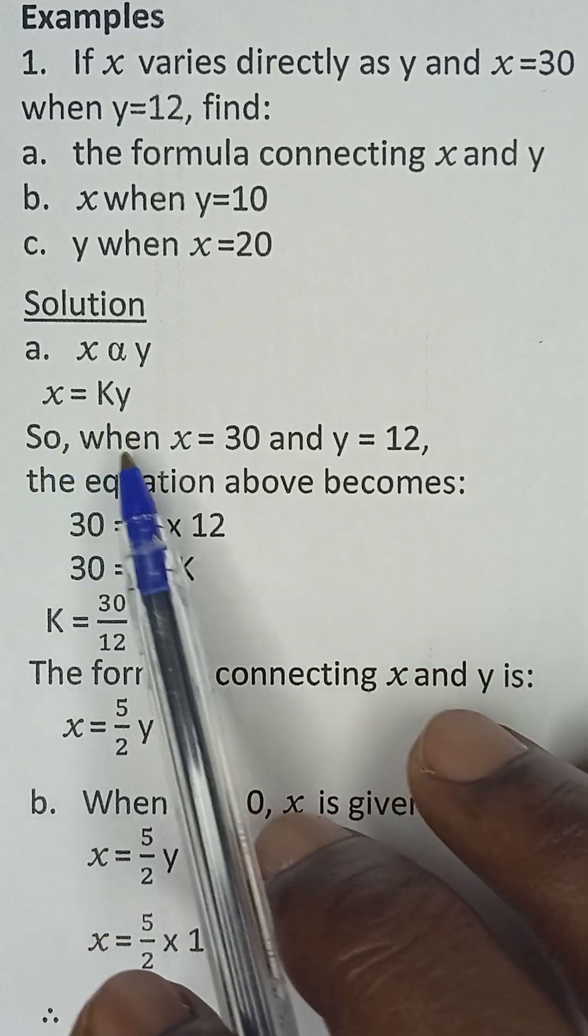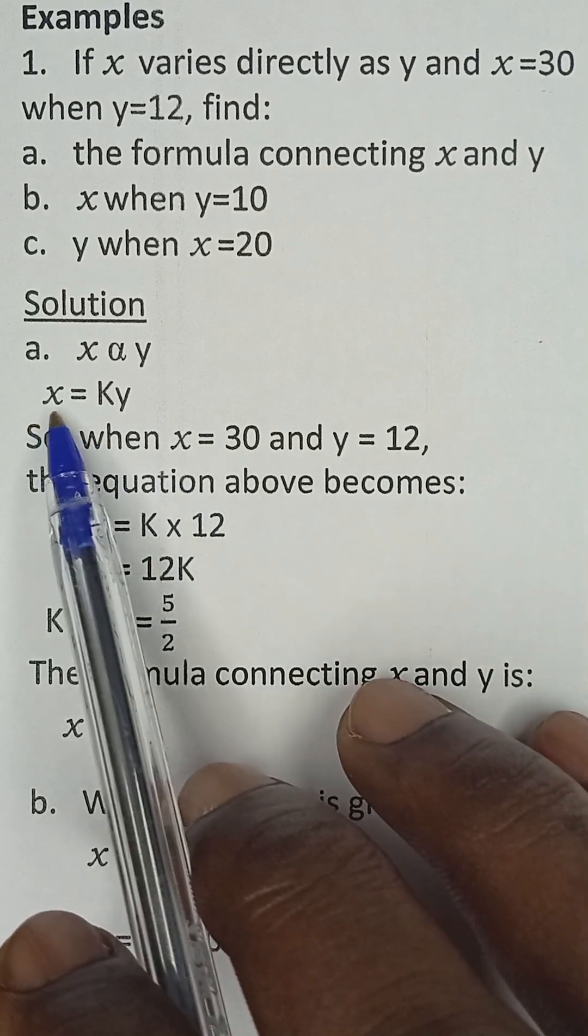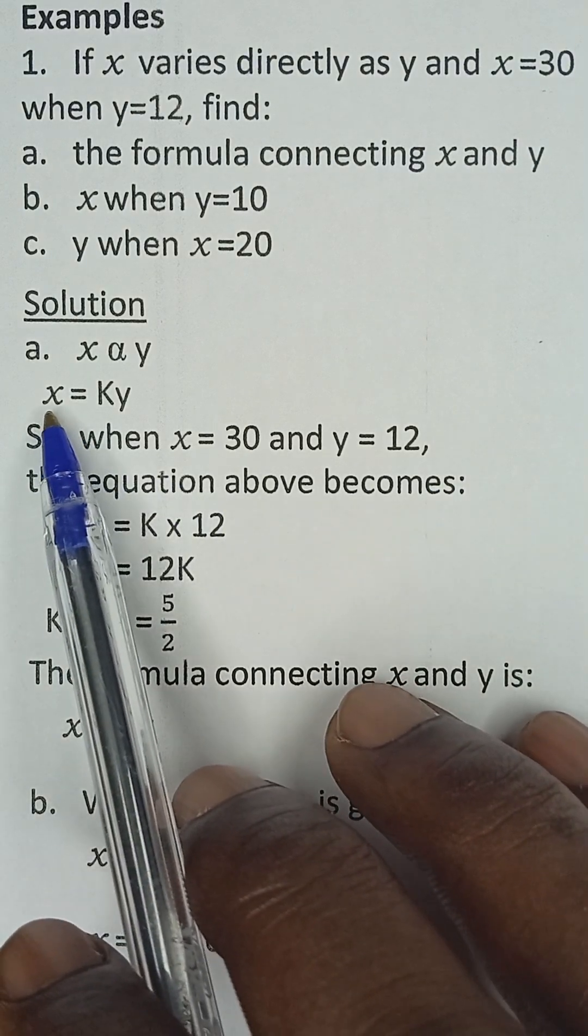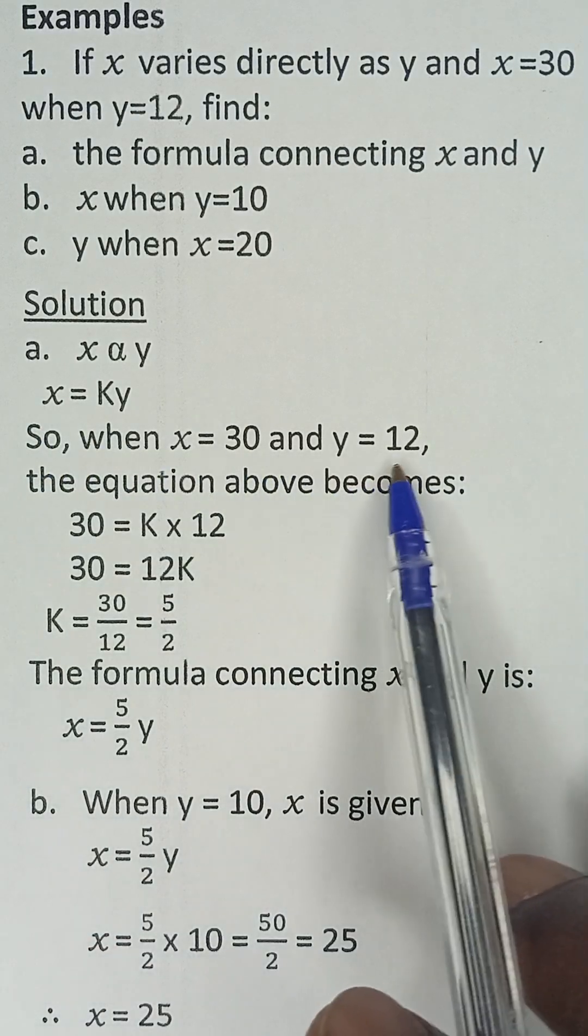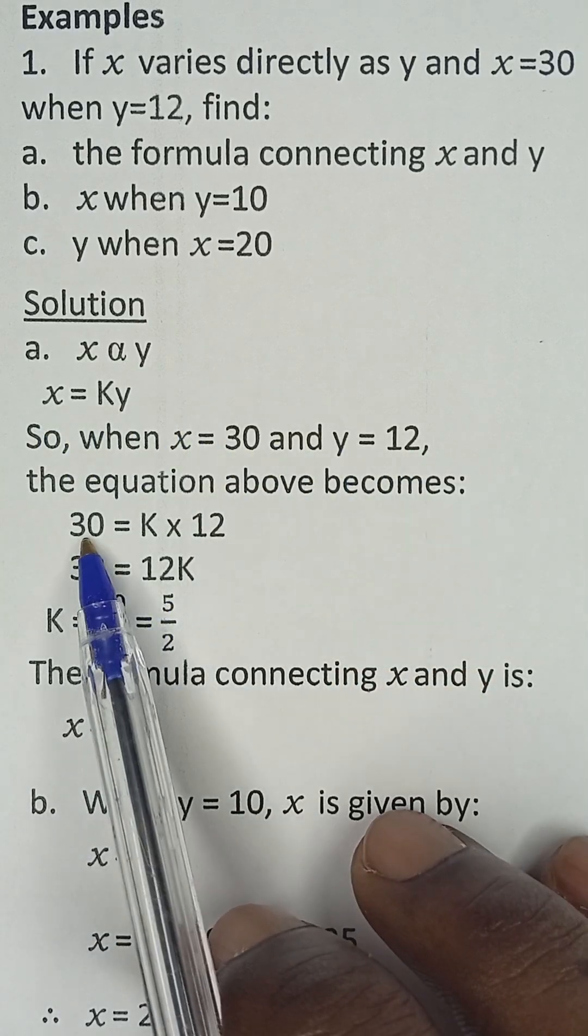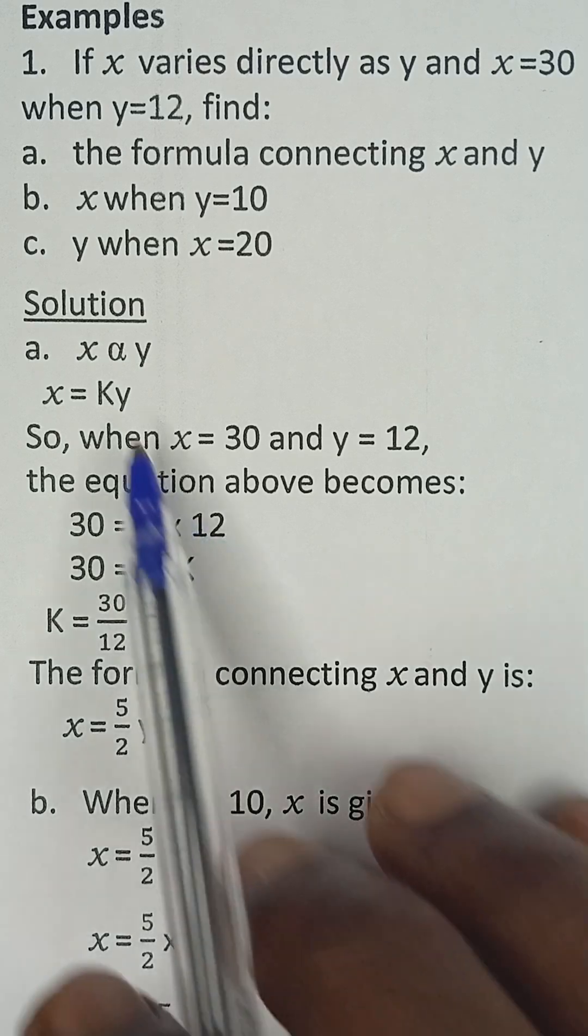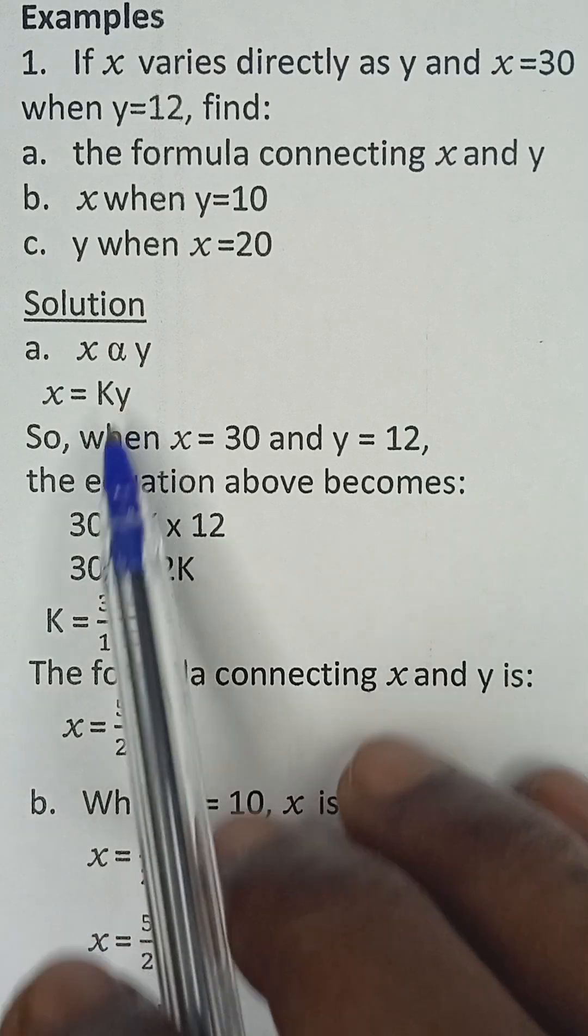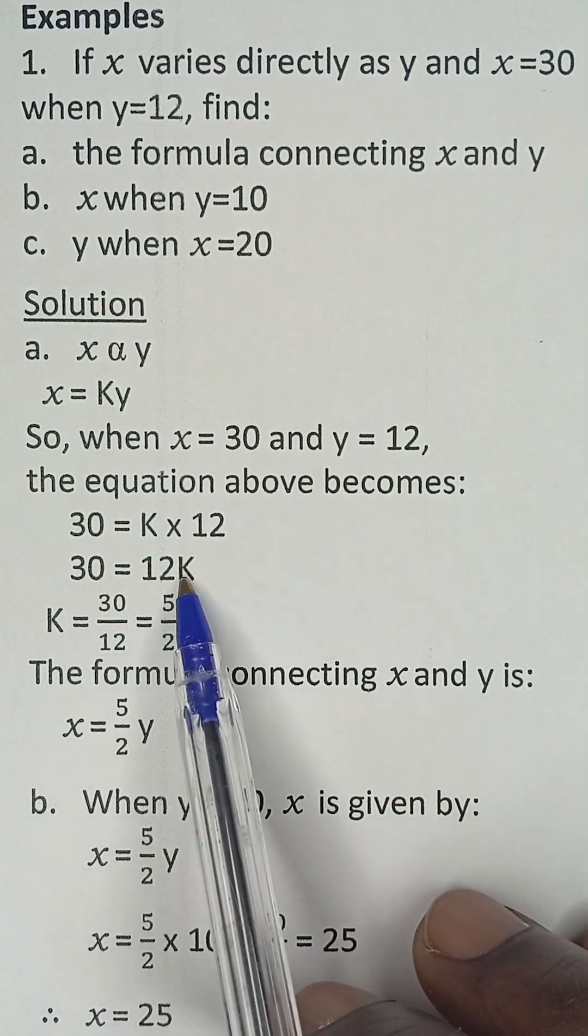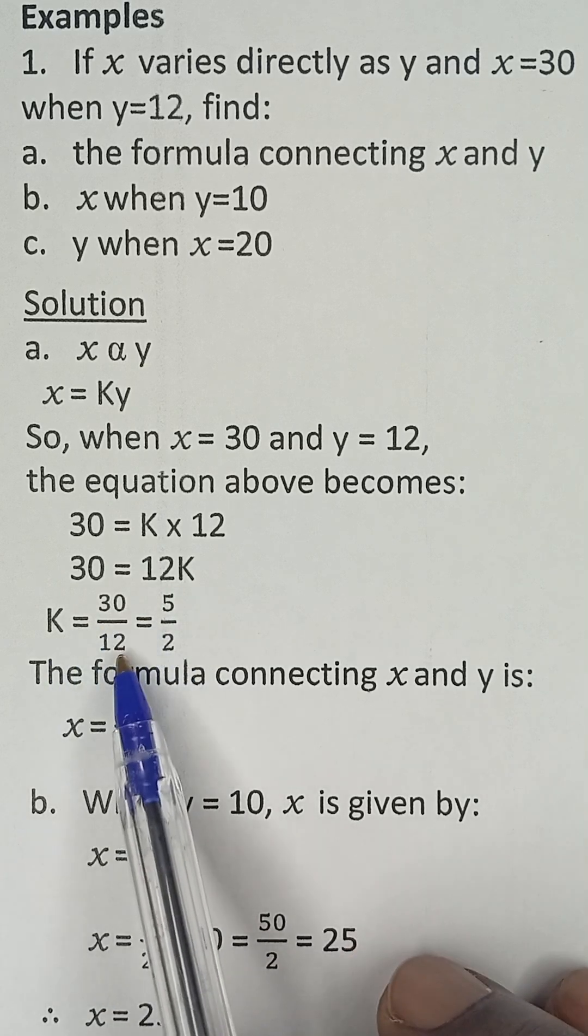So the question now says, when X equals 30, Y is equal to 12. So we are going to substitute the value of 30 for X and the value 12 for Y in this equation. So we have 30, which is X here, is equal to K multiplied by 12, which is the value of Y. And then we have 30 equals 12K. When we divide both sides by 12, we have K is equal to 30 over 12, which is 5 over 2.